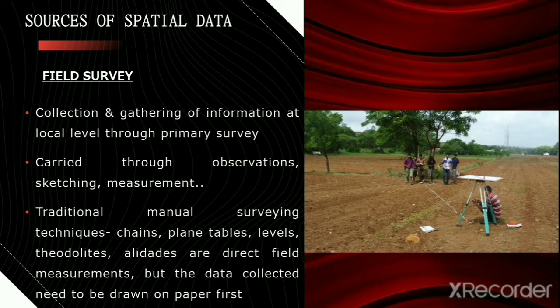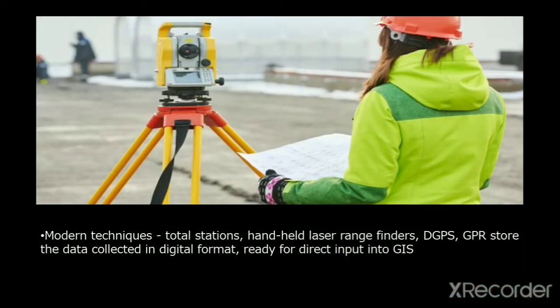Field survey is another source of spatial data. It is the collection and gathering of information at a local level through primary survey, carried out through observations, sketching, and measurement. Field surveys are generally conducted by an organization when there is a lack of available proper data. Traditional manual surveying methods use chain, plane table, theodolite, and alidade, recording data in a field book. Modern techniques like total station, DGPS, and GPR store data in digital format, ready for direct input into GIS.